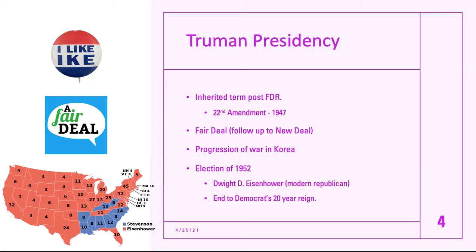Truman had to fill the shoes of the New Deal. His program, announced in his State of the Union in 1949, is called the Fair Deal. He announced plans for domestic policy reforms that included national health insurance, public housing, civil rights legislation, and federal aid to education. He also advocated for an increase in the minimum wage. The federal minimum wage is the minimum every state must follow; states can pay more but cannot set theirs lower.